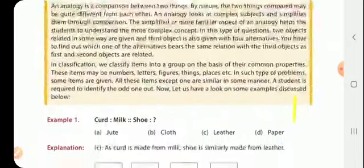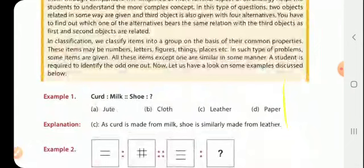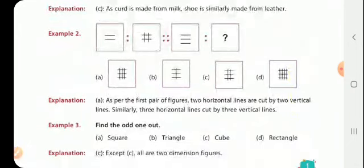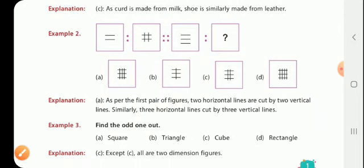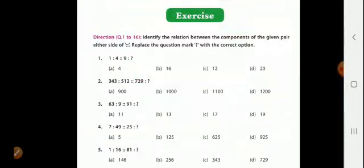This is analogy where we make comparison between two things. Now another category of questions is classification, in which we classify items into a particular category based on certain similarities or dissimilarities. Like example three: find the odd one out among square, triangle, cube, rectangle. The odd one is cube, which is a 3D figure with length, breadth, and height. The remaining ones are two-dimensional figures with only length and breadth. Now we are going to start with the exercises.